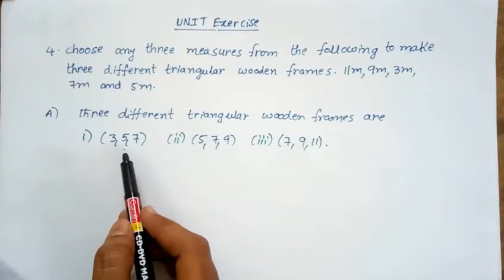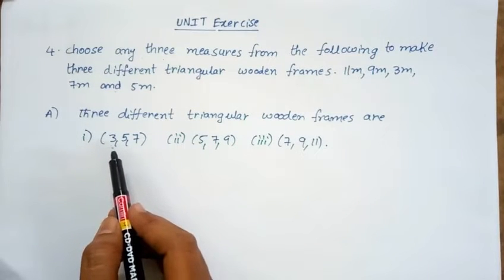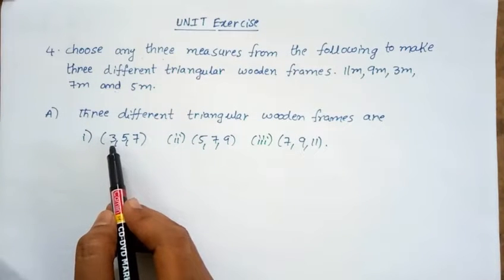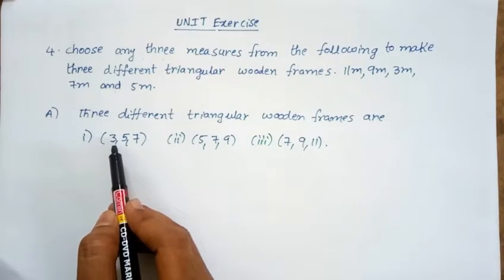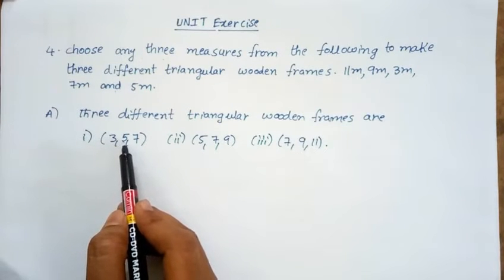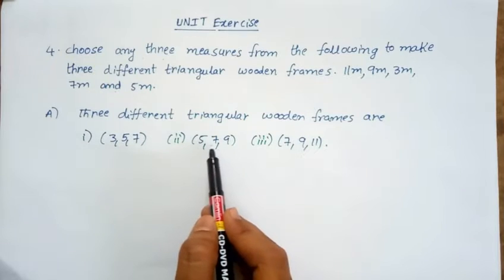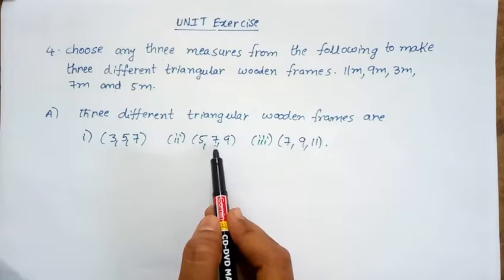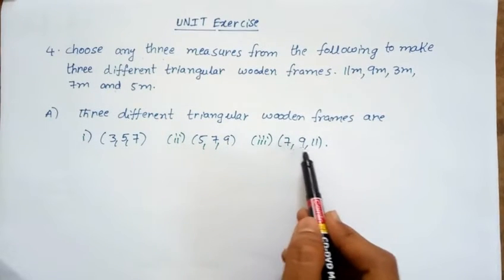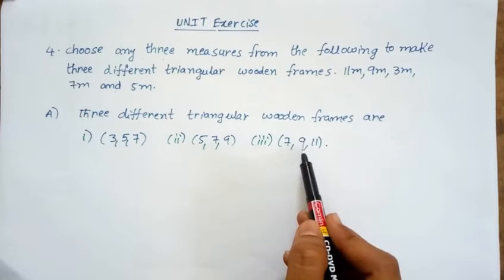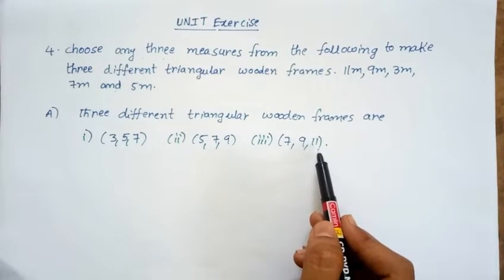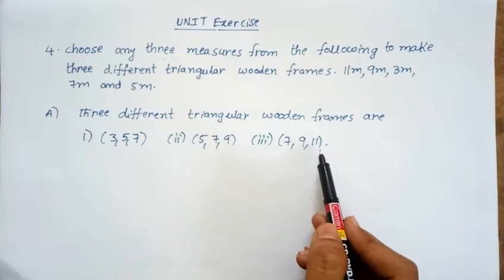I am choosing these lengths where the sum of two sides is greater than the third side. 3 plus 5 equals 8, which is greater than 7. 5 plus 7 equals 12, which is greater than 9. 7 plus 9 equals 16, which is greater than 11. So like that I am choosing the wooden frames.